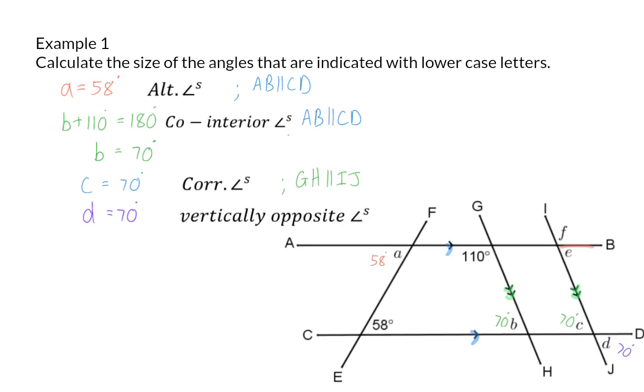For angle E, you now have two options. You can go with the N of alternate angles, or you can make use of the F for corresponding angles. But either way, you will get to E also being equal to 70 degrees. I'm going to choose to use my F, so that is corresponding angles, with my parallel lines being AB and CD.